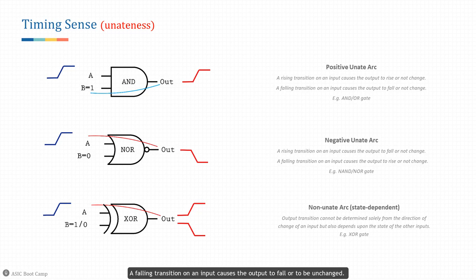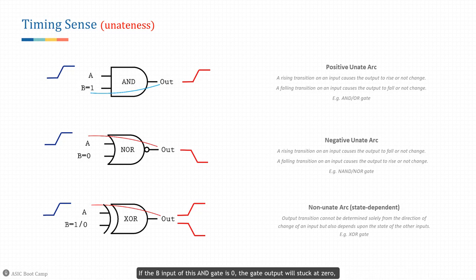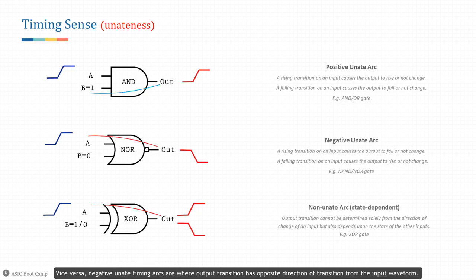For example, if the B input of an AND gate is one, the gate will become transparent to the A input, so the output transition follows the A pin. If the B input is zero, the gate output will be stuck at zero, so any change on the A pin won't cause a change on the output.